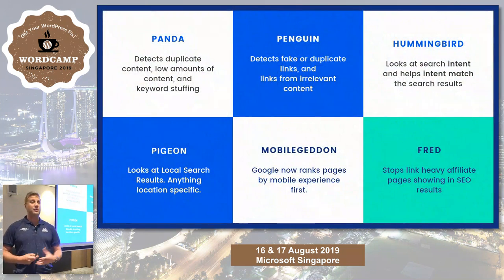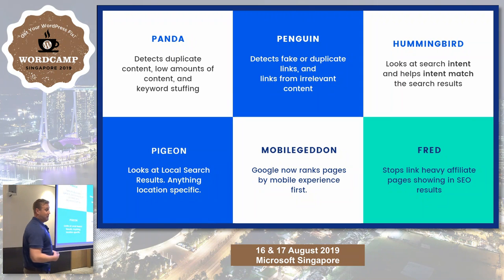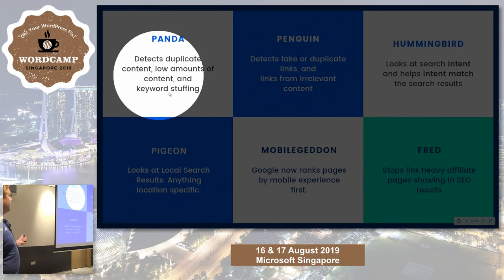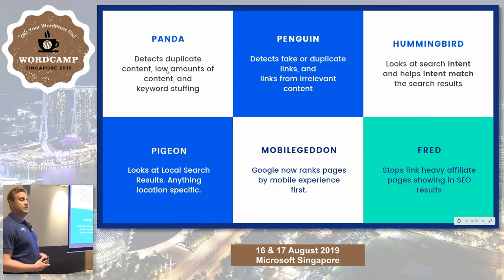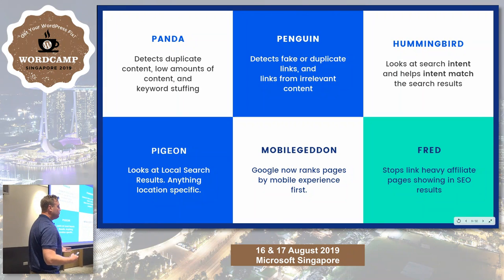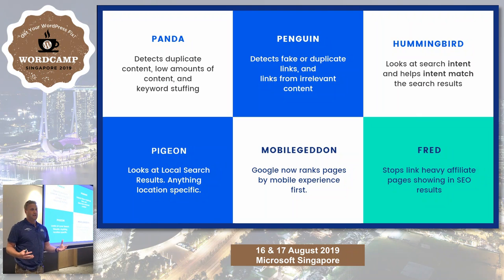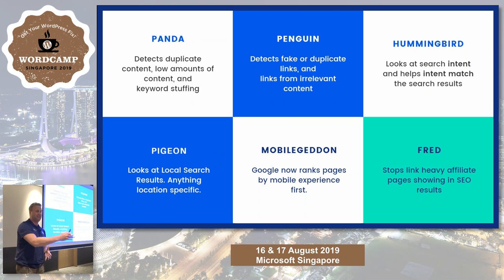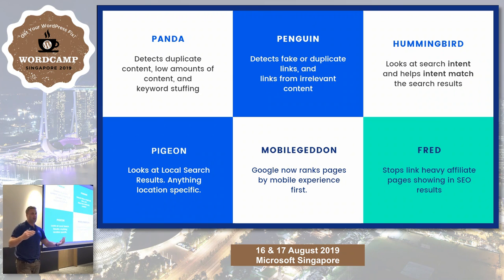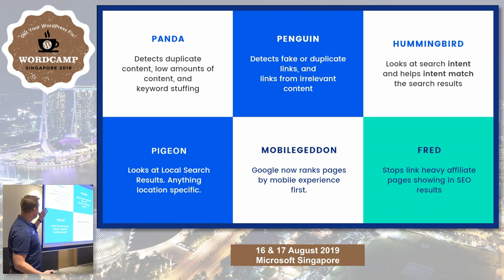Since then, they've come up with all sorts of other algorithms. Panda detected duplicate content — a lot of WordPress sites got hit because we end up with duplicate content through category pages, tag pages, and things like that. Everyone gets tag happy, putting hashtag this, hashtag that, thinking they're on Twitter. You just created five pages with links to the same stuff — that's duplicate content.